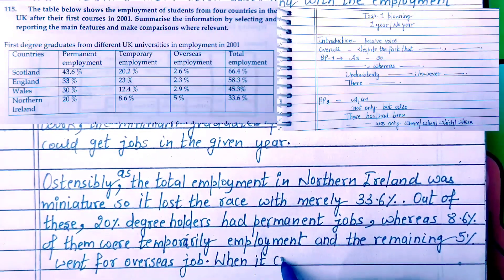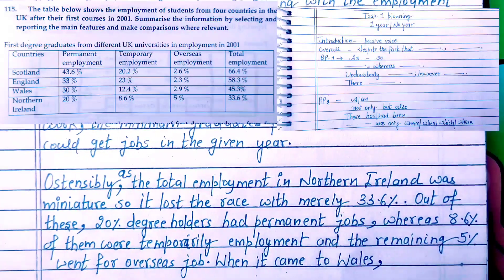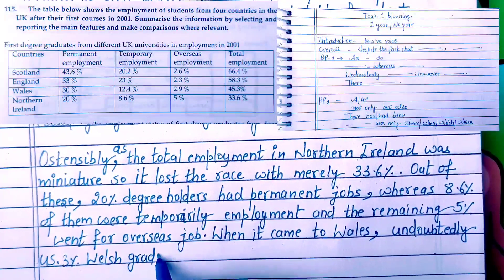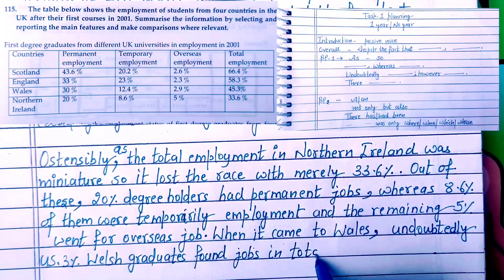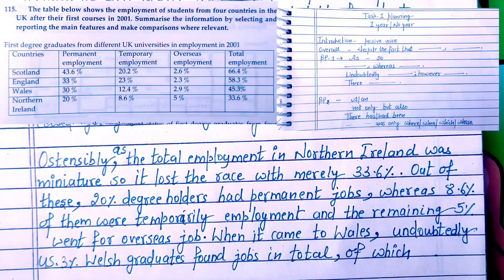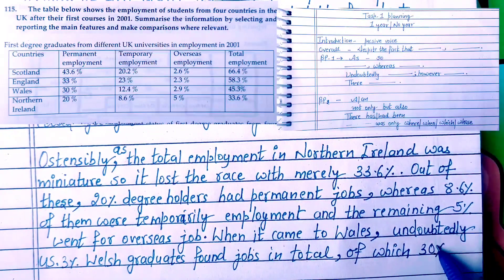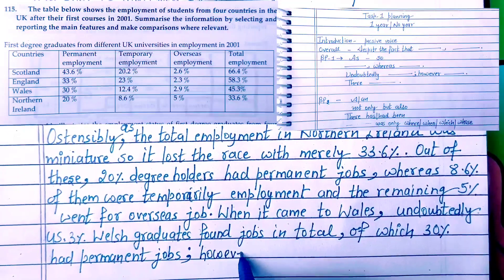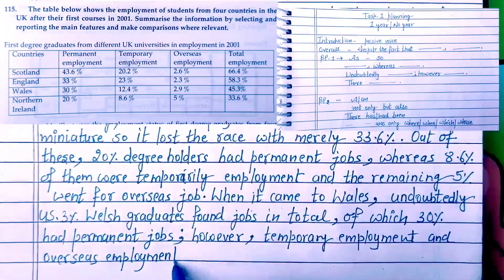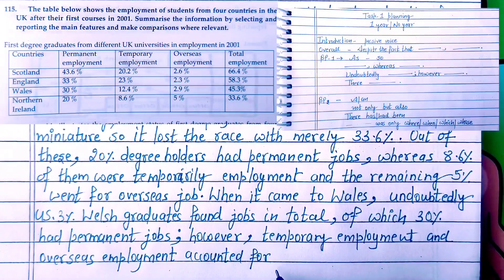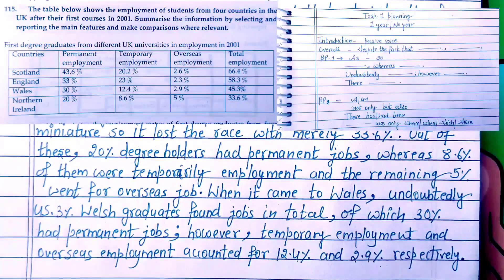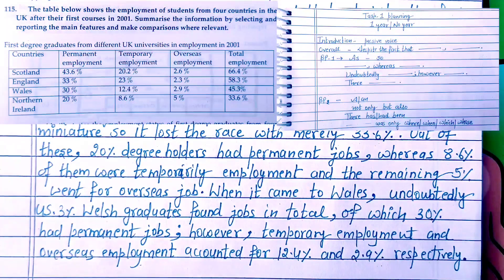When it comes to Wales, I'm going to talk about Wales. My sentence structure will be 'undoubtedly' and 'however'. When it came to Wales, undoubtedly 45.3% of Welsh graduates found jobs in total. Out of which, 30% had permanent jobs. However, temporary employment and overseas employment accounted for 12.4% and 2.9% respectively. That's how I compared using the 'however' sentence structure along with 'respectively'.